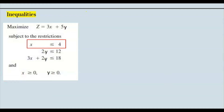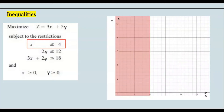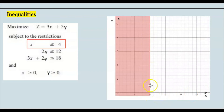Let's take our first equation: x ≤ 4, and graph it. On the x-y axis, since x ≤ 4, we go to the x-axis and draw a vertical line at 4. Since the inequality is 'less than or equal to 4,' everything on the left-hand side is shaded.